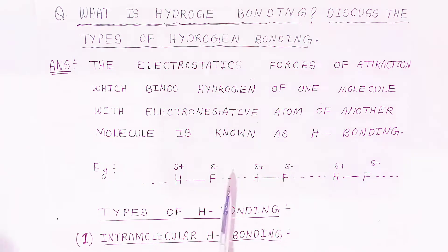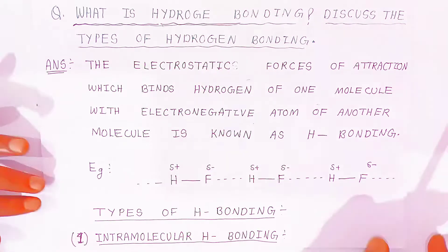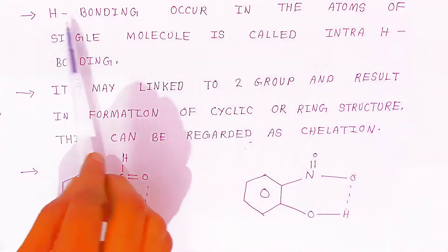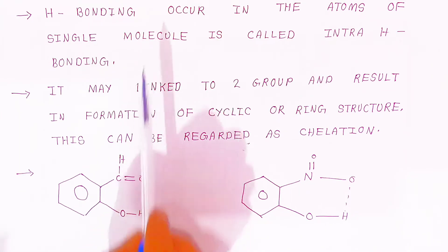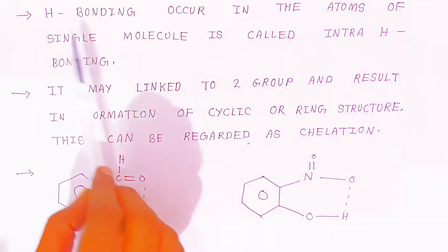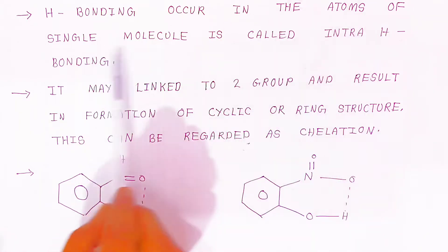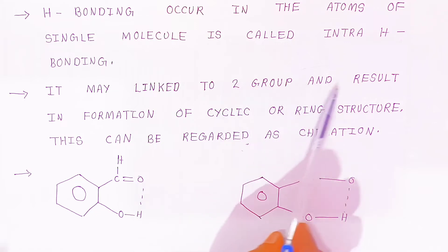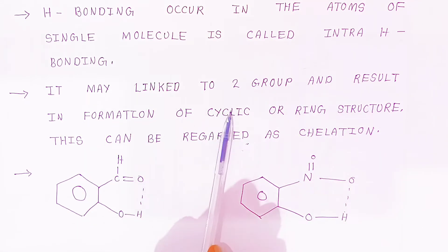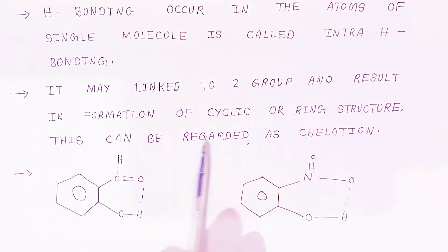The first type is intramolecular hydrogen bonding. 'Intra' means inside — it occurs within the same single molecule. In intramolecular hydrogen bonding, the hydrogen bonding occurs between atoms of a single molecule. It may link two groups within the molecule, resulting in the formation of a cyclic or ring structure.